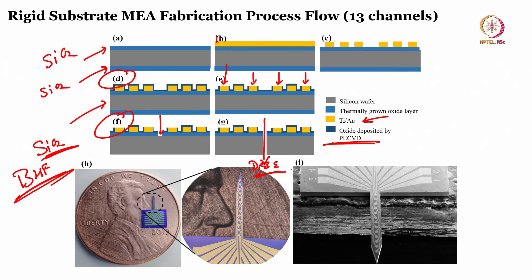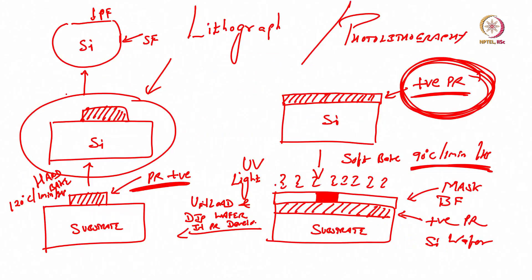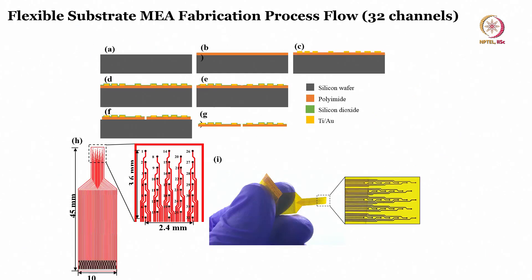Finally, you perform deep reactive ion etching. What you have is a probe with multiple electrodes that can be used for measuring several signals in the brain.